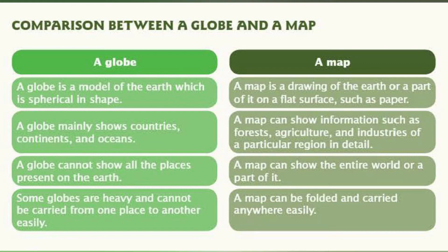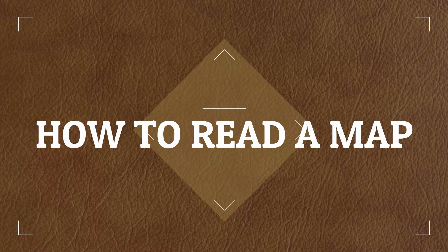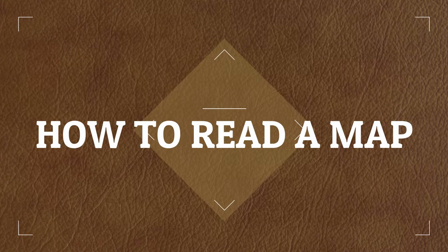A globe cannot show all the places present on the earth, whereas a map can show the entire world or a part of it. Some globes are heavy and cannot be carried from one place to another, but a map can be folded and carried anywhere easily. Let's move further.